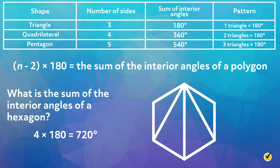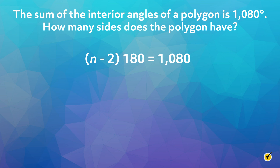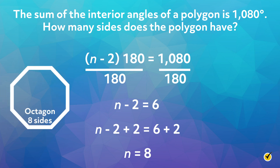Now that we have a formula, we can solve many more types of problems. Here is another example: the sum of the interior angles of a polygon is 1080 degrees — how many sides does the polygon have? We can use the formula and substitute what we have: n minus 2 times 180 equals 1080. Since n represents the number of sides, we can use our algebra skills to solve for n. First, we divide both sides by 180, which gives n minus 2 equals 6. Then we add 2 to both sides to get n equals 8. Therefore, the polygon with interior angles adding to 1080 degrees is an octagon.